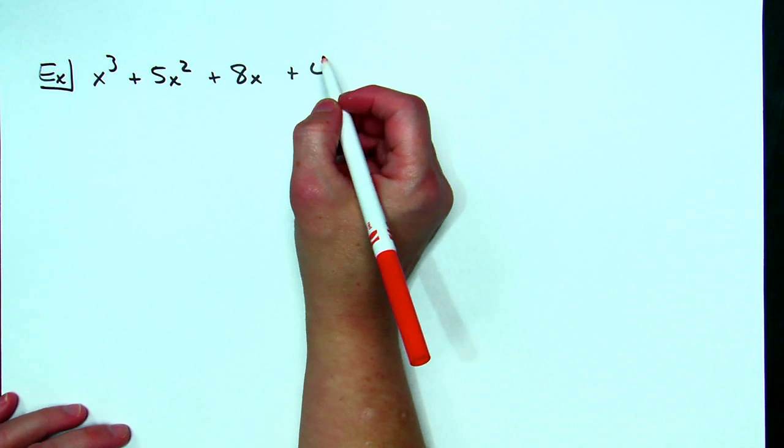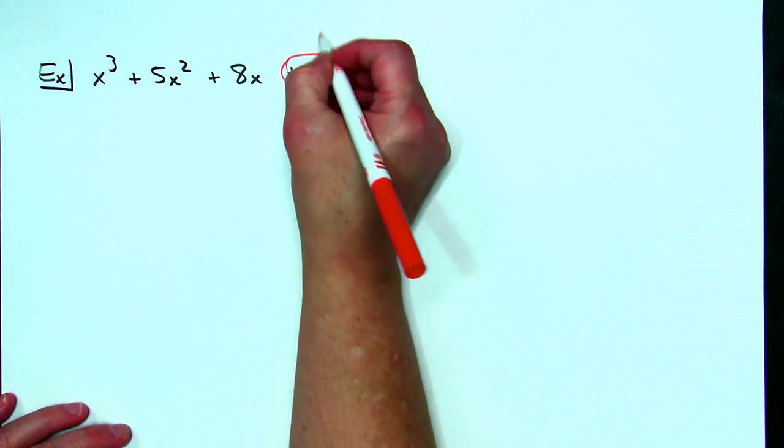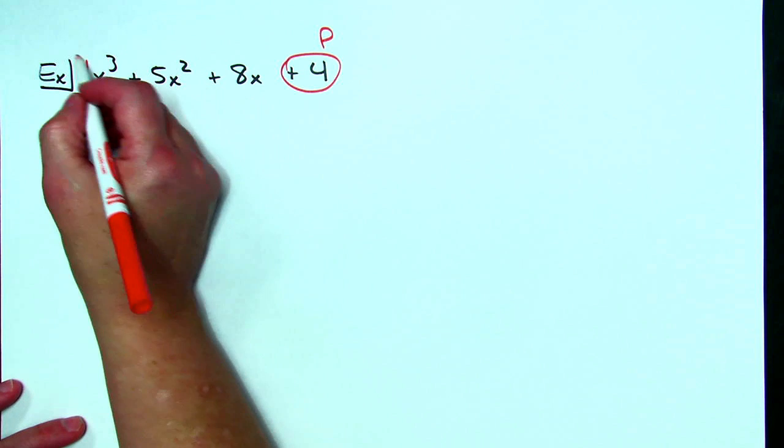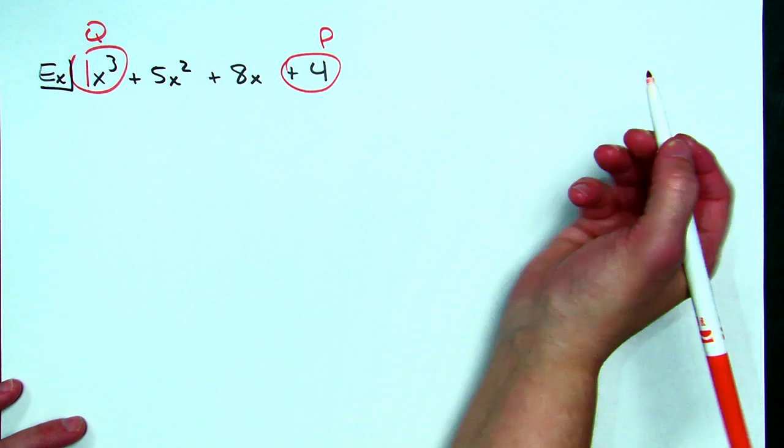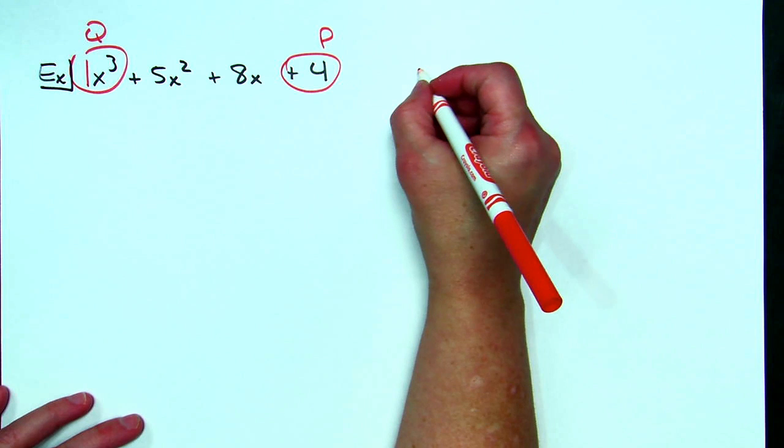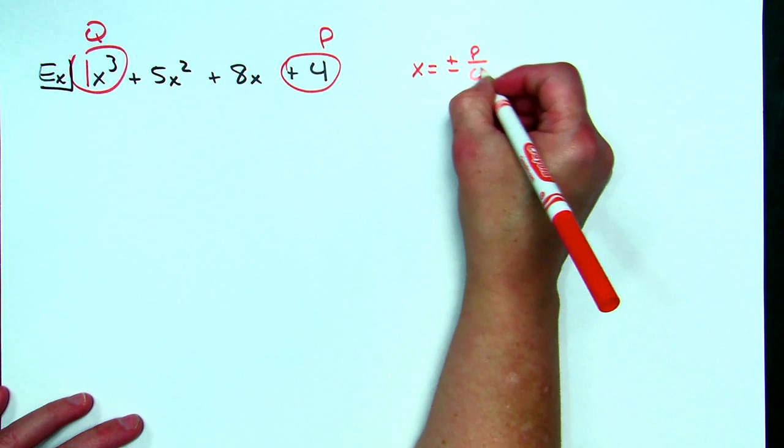The rational root theorem says that if we take this ending constant and we let that be p and we take the leading integer coefficient which in this case is a 1 and we let that be our q then we should be able to generate all of our possible roots with the equation x equals plus or minus p over q.